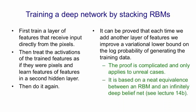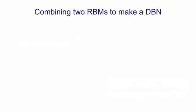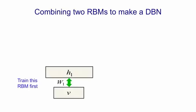The proof is based on a neat equivalence between a restricted Boltzmann machine and an infinitely deep belief net. Here's a picture of what happens when you learn two restricted Boltzmann machines, one on top of the other, and then combine them to make one overall model, which I call a deep belief net. First we learn one Boltzmann machine with its own weights. Once that's been trained, we take the hidden activity patterns of that Boltzmann machine when it's looking at data, and we treat each hidden activity pattern as data for training a second Boltzmann machine.